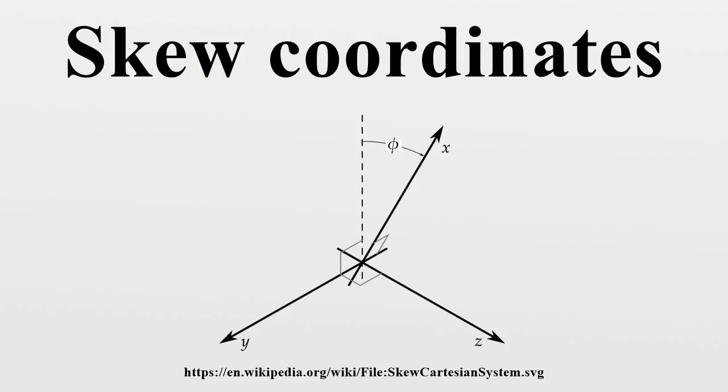The simplest 3D case of a skewed coordinate system is a Cartesian one where one of the axes has been bent by some angle, staying orthogonal to one of the remaining two axes. For this example, the x-axis has been bent toward the z-axis while remaining orthogonal to the y-axis.